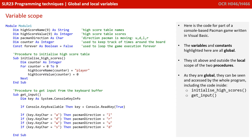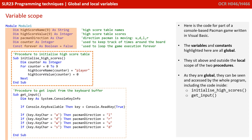Here is the code for part of a console-based Pac-Man game written in Visual Basic. The variables and constants currently highlighted are all global. They sit above and therefore outside the local scope of the two procedures shown. As they're global, they can be seen and accessed by the whole programme, including any code inside the initialised high score or get input procedures.